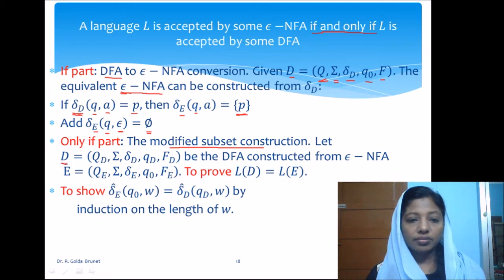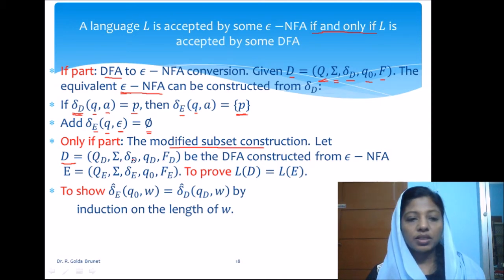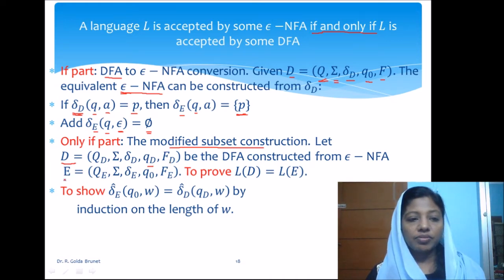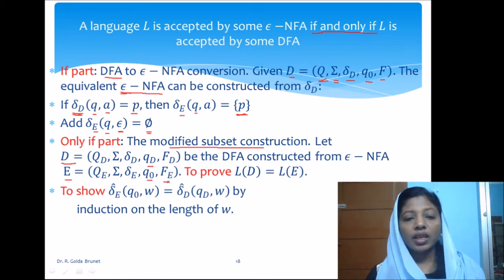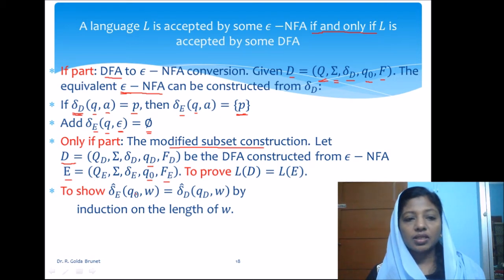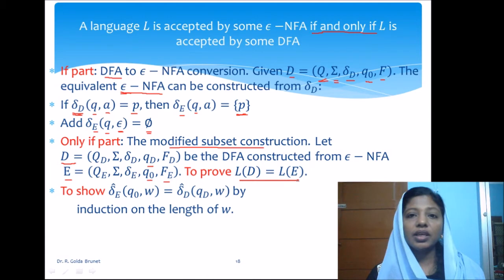We construct DFA D with states Qd, input symbols, transitions delta D, initial state Qd, and set of final states Fd. This is constructed from the epsilon-NFA E with states Qe, the same set of input symbols, transition function delta E, starting state Q naught, and set of final states Fe. We have to prove that the language of the DFA equals the language of the epsilon-NFA.